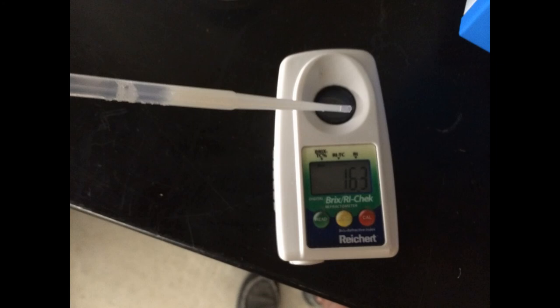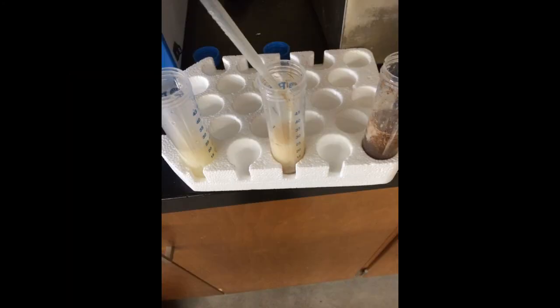Test the soluble carbohydrate concentration using a refractometer one last time and record. Refrigerate samples to prevent microbial contamination. You can use them in the subsequent fermentation lab. Thank you for watching this instructional tutorial on converting cellulosic biomass to sugar.